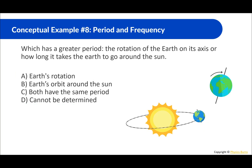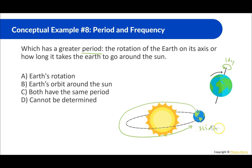Which has a greater period: the rotation of the Earth on its axis, or the Earth going around the Sun? Period is how long it takes to complete one cycle. The Earth spinning on its axis takes one day, while the Earth going all the way around the Sun takes one year, or 365 days. So the Earth orbiting around the Sun has the greater period.